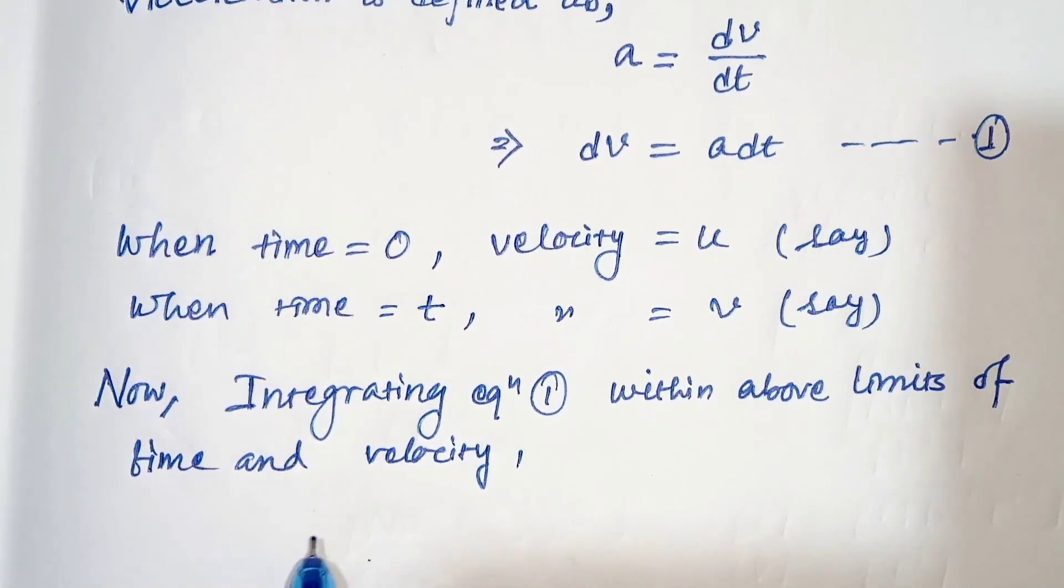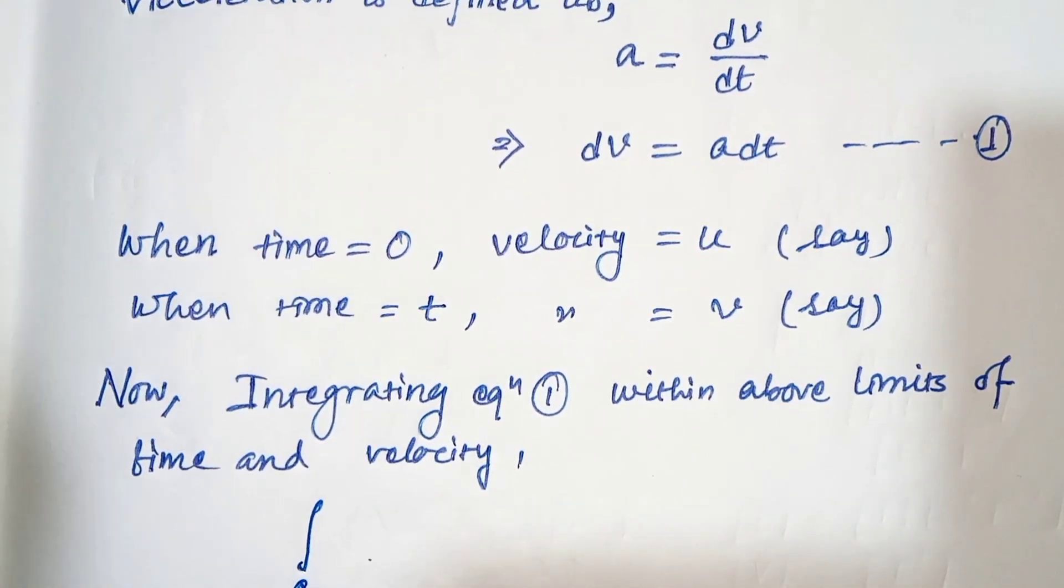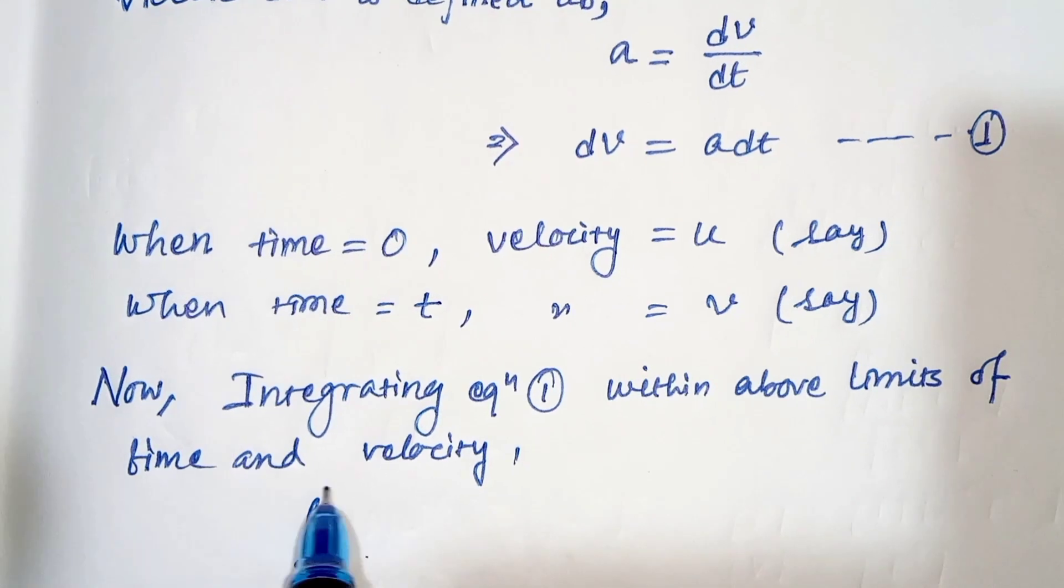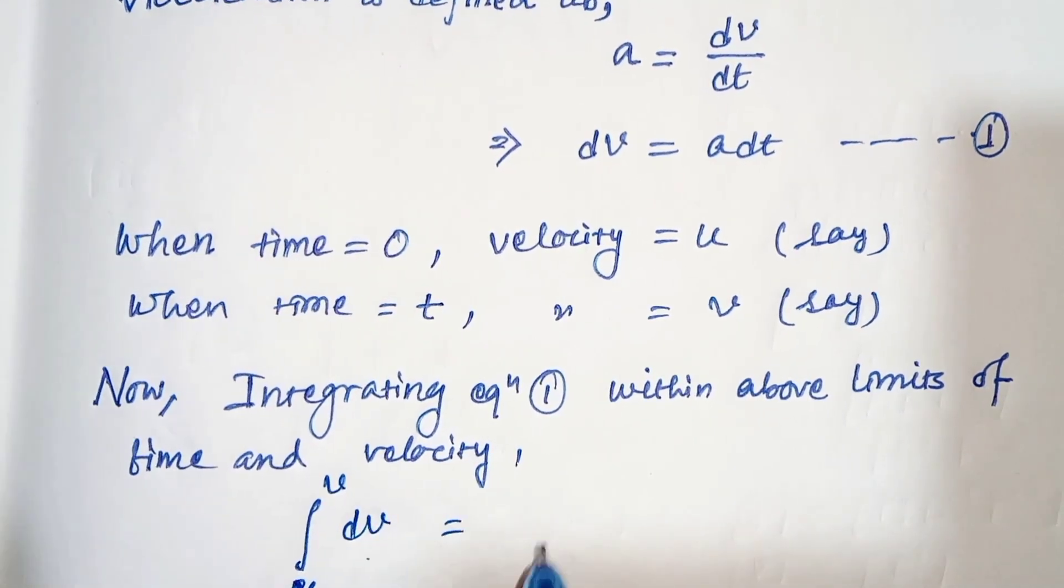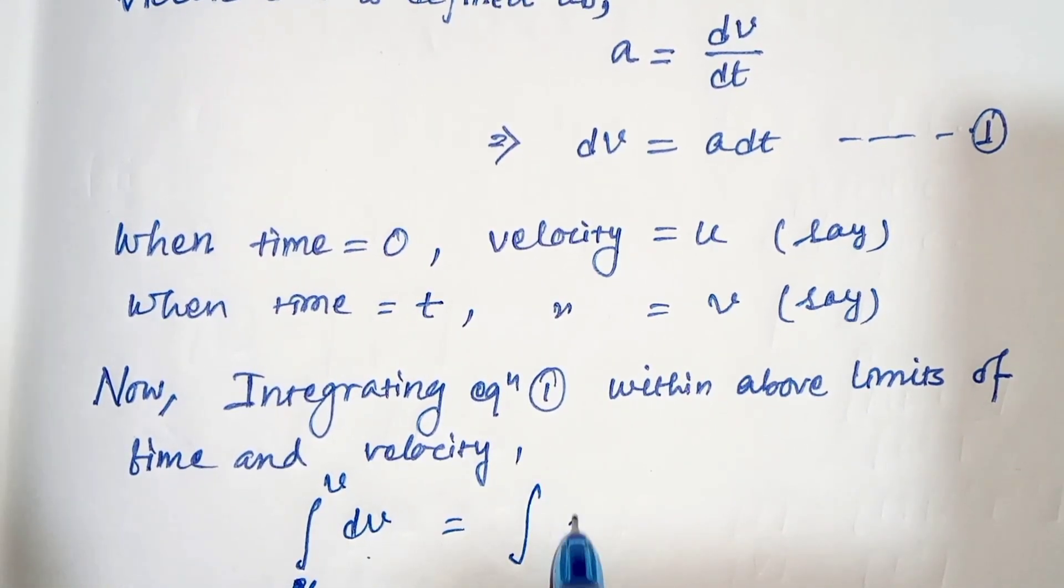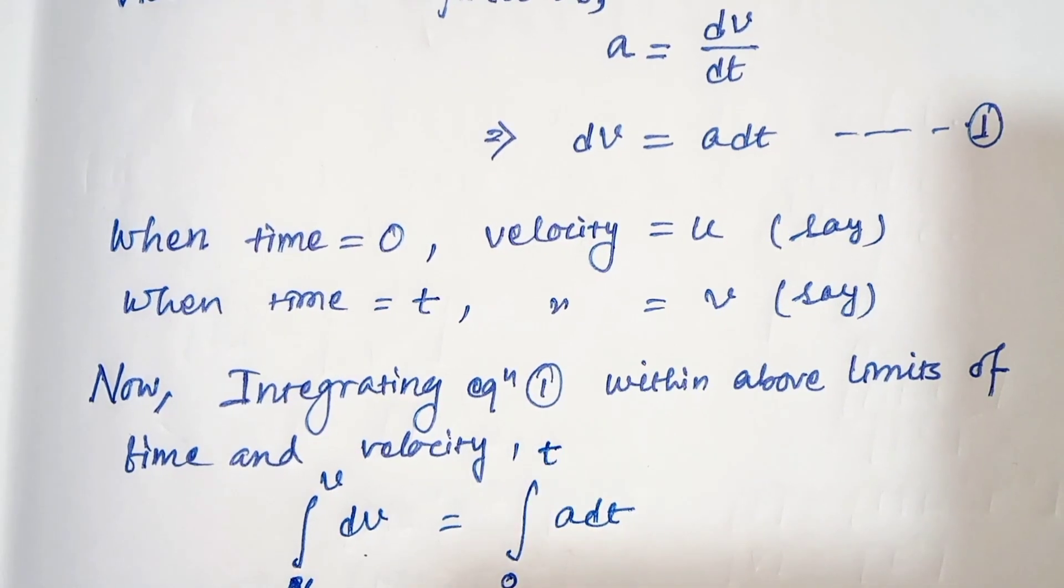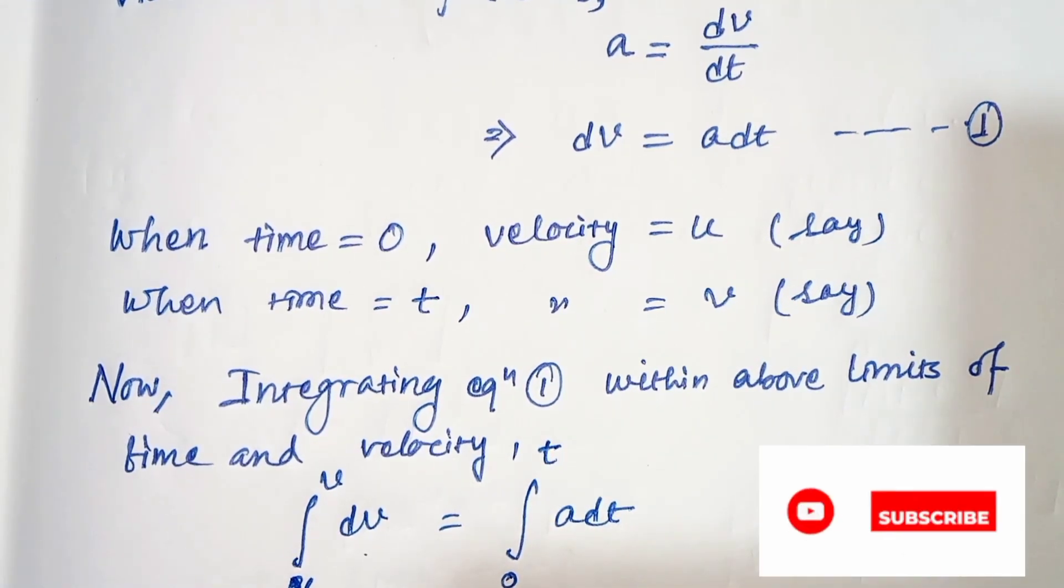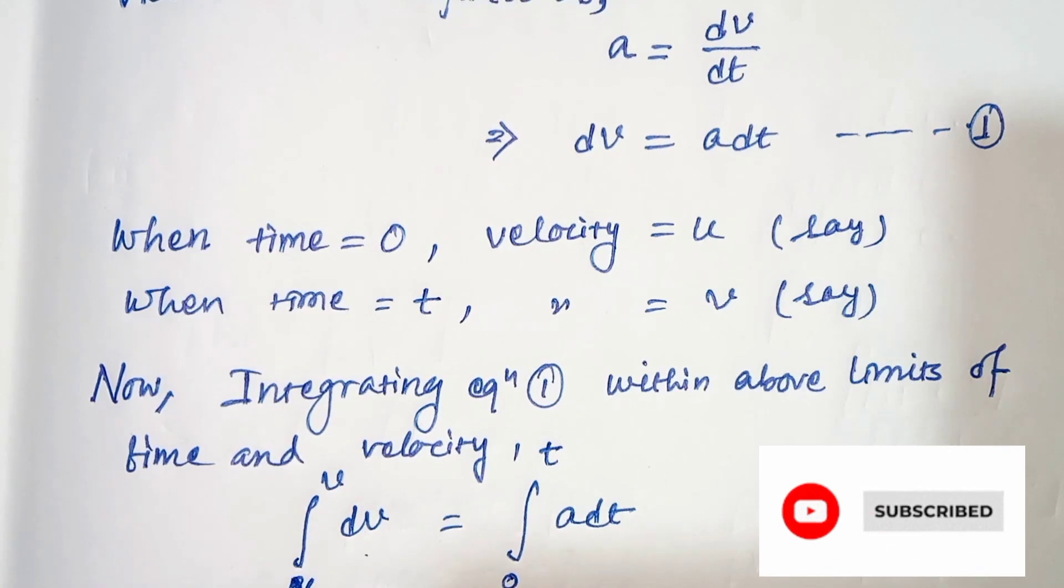So it will be integral from u to v of dv equals integral from 0 to t of a dt. For time 0, the velocity was u, and for time t, the velocity was v.